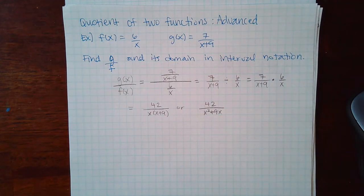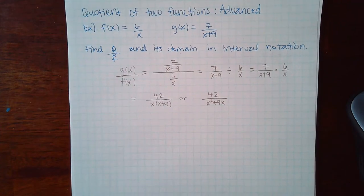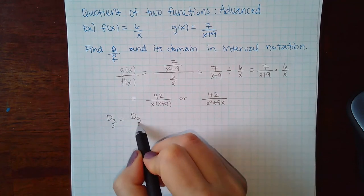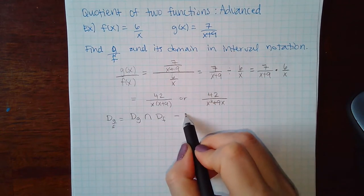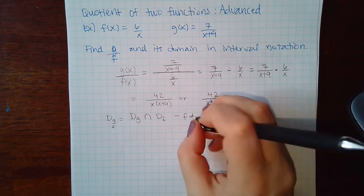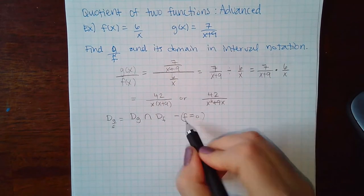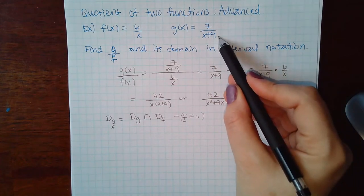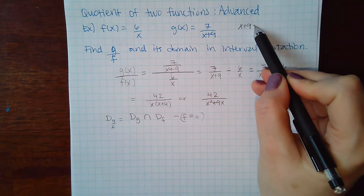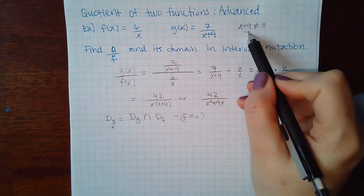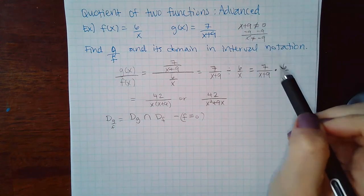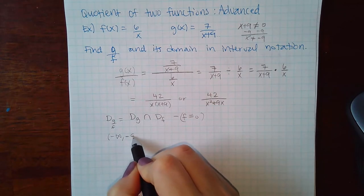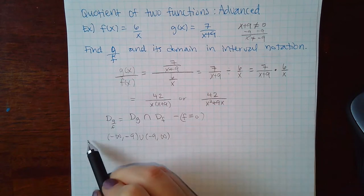To find the domain of g over f, we need the domain of g intersected with the domain of f, then remove any values that make the denominator equal to 0. For g, the denominator x+9 cannot equal 0, so x cannot equal −9. In interval notation: (−∞, −9) union (−9, ∞).